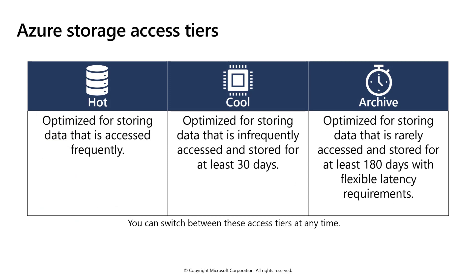It's important to note that several storage technologies offer storage access tiers. The hot access tier is used for storing data that's accessed frequently, provides the best performance, and as a result is the most costly. The cool access tier is for storing data that is infrequently accessed and stored for at least 30 days. The archive access tier is used for storing data that's rarely accessed, must be stored at least 180 days, has flexible latency requirements, is the least expensive, but takes the most amount of time to retrieve data from.